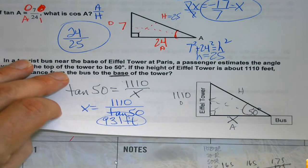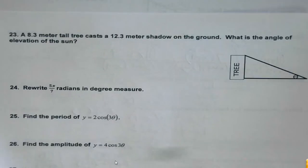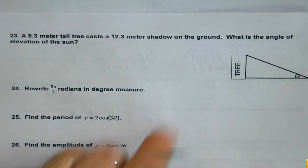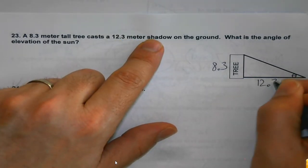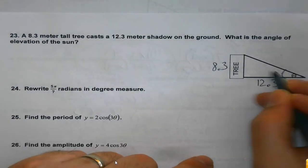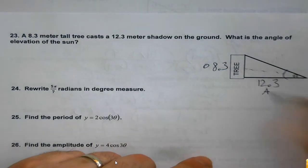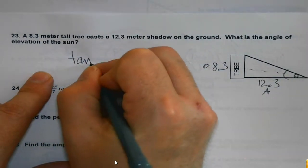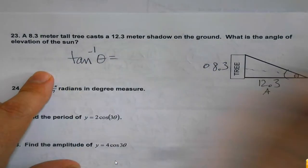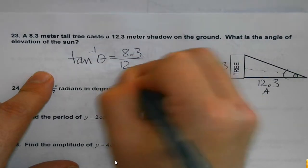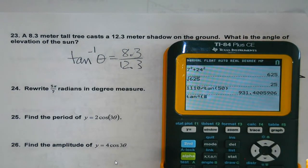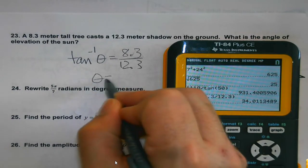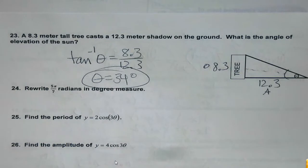Another application: an 8.3 meter tree with a 12.3 meter shadow — shadows are on the ground. What's the angle of elevation? Opposite over adjacent, so tangent again. But here's the key: if I'm looking for an angle, I need that little negative one — hit second with my trig function, second tangent — gives me about 34 degrees.